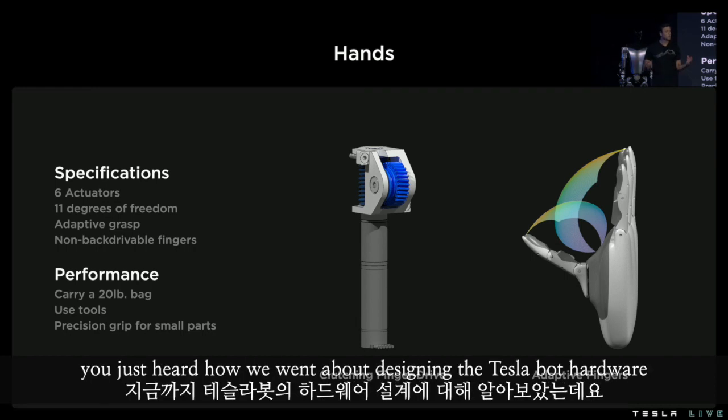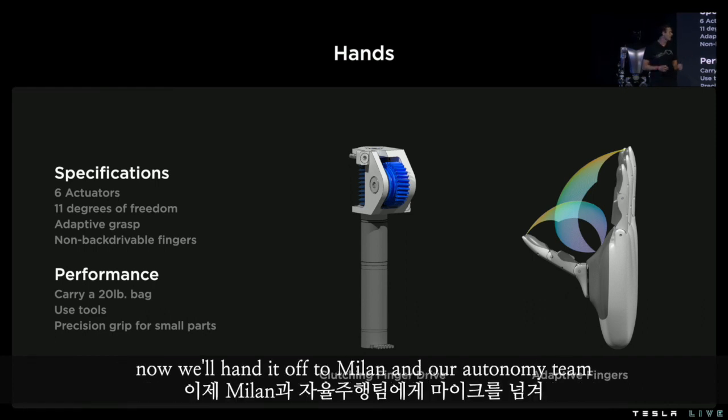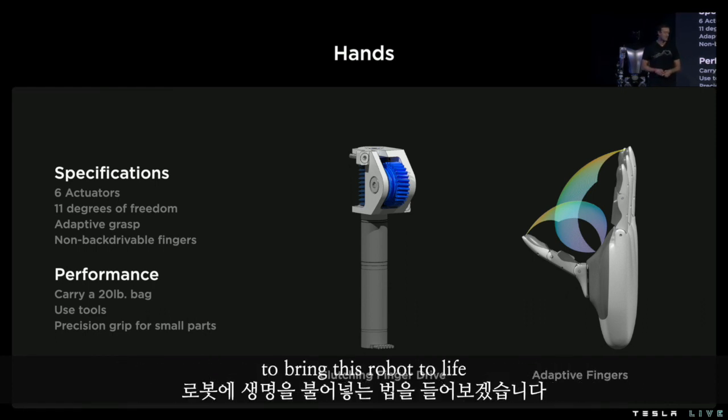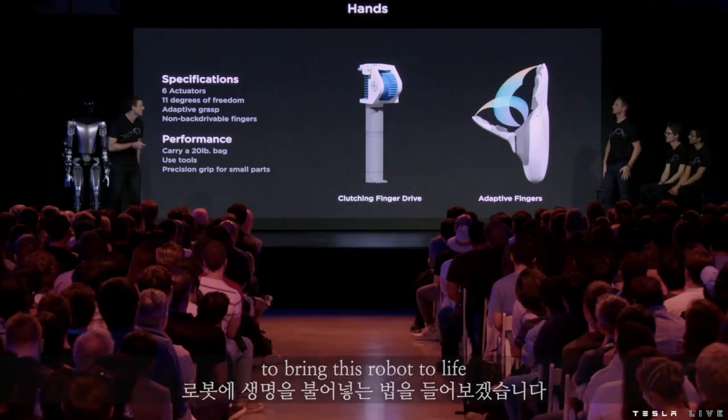Another important part is that we have a non-back-drivable finger drive. This clutching mechanism allows us to hold and transport objects without having to turn on the hand motors. Now I'll hand it off to Milan and our autonomy team to bring this robot to life.